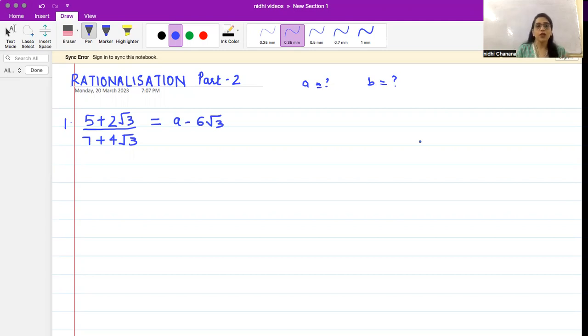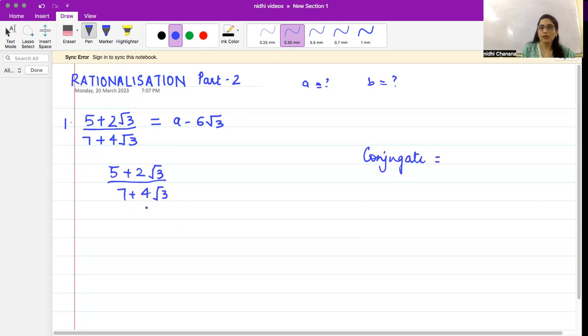Let's start with this example. The first example we have here is (5 + 2√3)/(7 + 4√3). We have learned about this in the previous video that when we do rationalization first we will find the conjugate. We will check our denominator which is 7 + 4√3, so we just have to change the sign, so that will become 7 - 4√3. This is the conjugate.